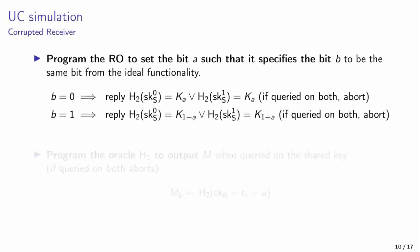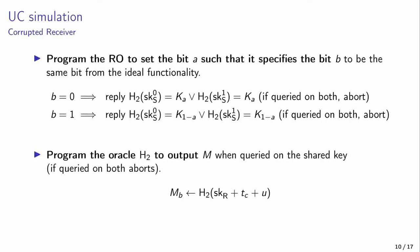Now the simulation for the corrupted receiver. The simulator will program the random oracle, such that the bit B it got from the ideal functionality is specified from putting the bit A equal to 0 or 1. A very relevant detail here is showing that the corrupted receiver can't query the oracle on both. But if the corrupted receiver could find both shared keys, then it could derive the shared key from only public information of the key exchange, or find the RLWE secret of a random sample. Finally, the simulator only has to reply to the query on H2 with the message it got from the ideal functionality when asked the respective query, concluding this simulation.